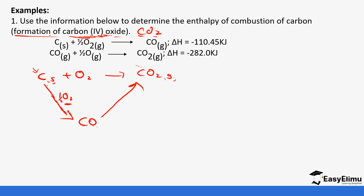Carbon monoxide needs to react with a certain amount of oxygen to form carbon dioxide. The carbons are balanced, and oxygen will require one more oxygen atom, so it is half an oxygen molecule. Once the cycle is drawn and equations are balanced, we compare our equations with what we have been given. The first given equation is carbon reacting with half of oxygen to form carbon monoxide, giving a change of negative 110.45 kilojoules. Carbon monoxide reacting with half oxygen to form carbon dioxide gives negative 282.0 kilojoules.